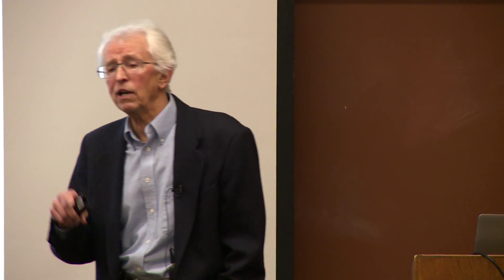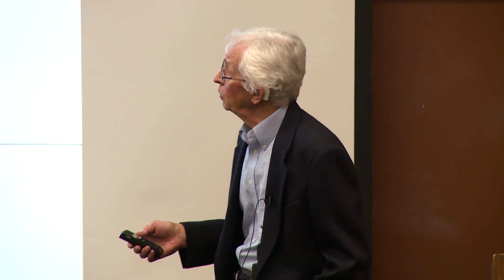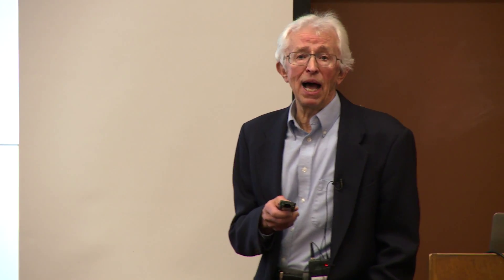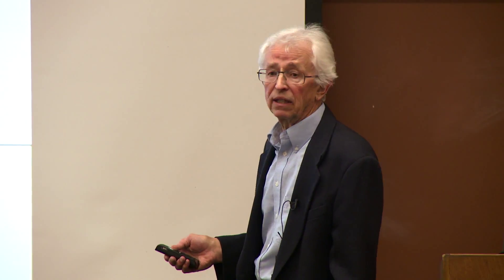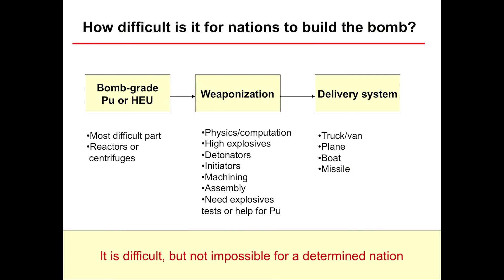If you run a light water reactor to make commercial electricity, it also makes plutonium — though not the best bomb-grade plutonium. So what does it actually take to build a bomb? First you have to have the fuel — no fuel, no bomb — and that's the hardest part, because building these centrifuges is pretty high-tech, and building a reactor isn't easy. Then, once you have the material, you have to build the bomb. That's what weaponization is.